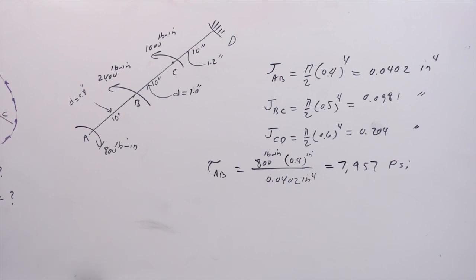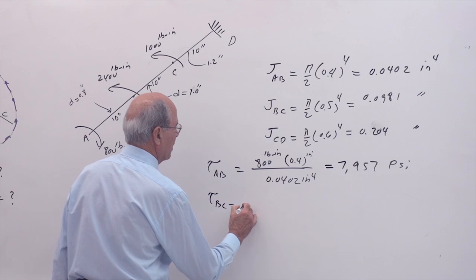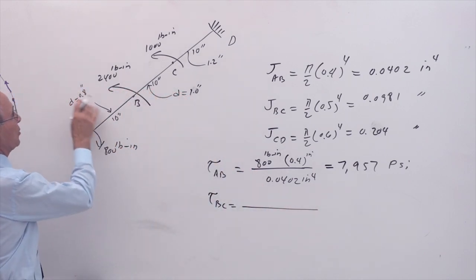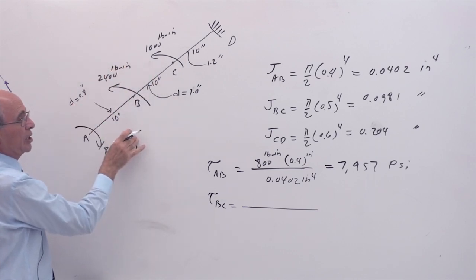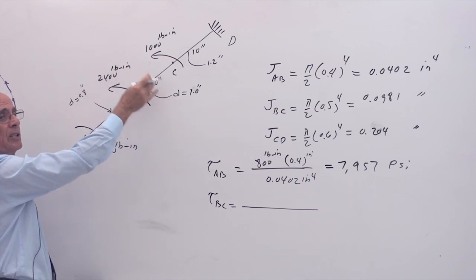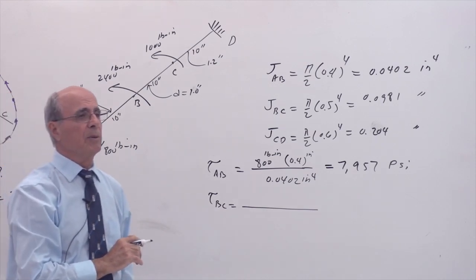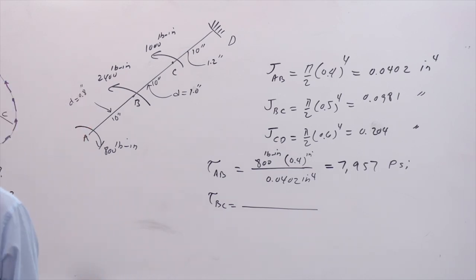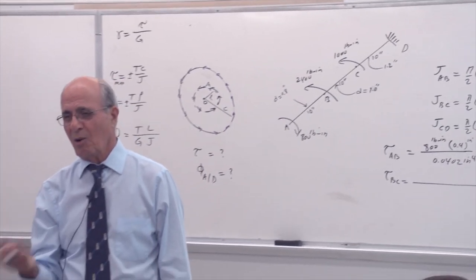We also need tau for BC and CD. For BC, the internal torque magnitude is not 800 — it is 2400 minus 800, which equals 1600, going counterclockwise. The radius is 0.5 and J is 0.0981. Tau_BC comes out to 8149 psi. The shear stress in BC is larger because the internal torque was larger, even though the shaft size was also larger.